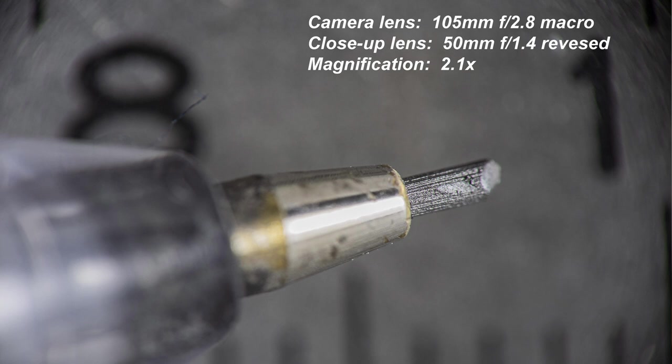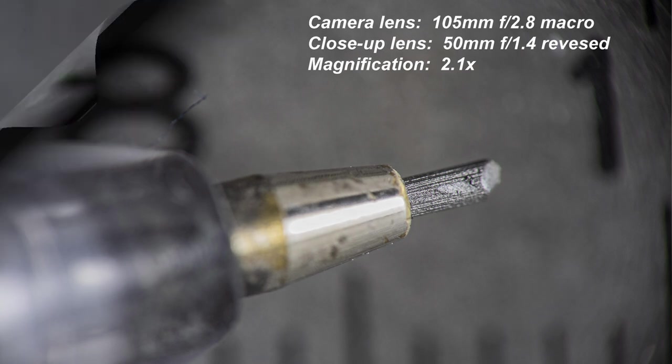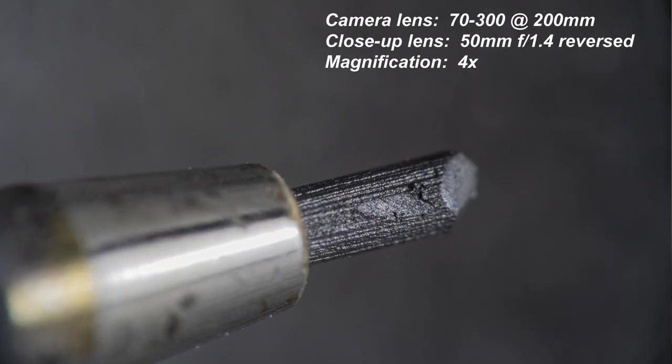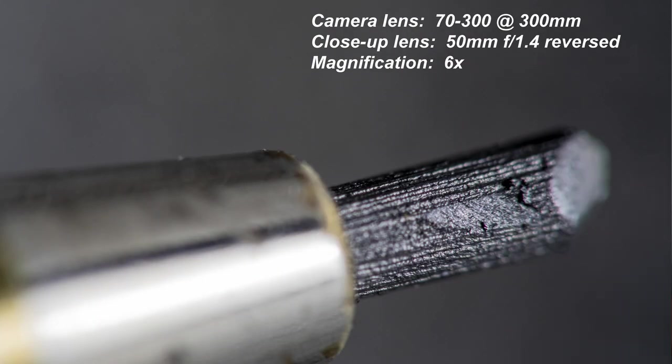With the 105 f2.8 micro lens, I can get a 2.1X magnification. With my zoom lens from 70-300 set at 200 mm, I can get a 4X magnification. And the same lens, 70-300 zoom lens set at 300 mm, I can get a 6X magnification.